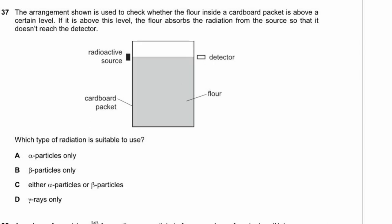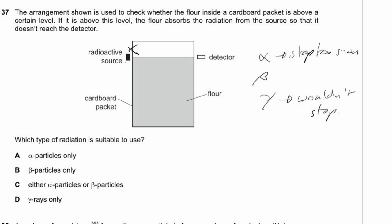Question 37. A radiation source checks whether flour inside a cardboard packet is above a certain level. Alpha radiation would be absorbed by the packet and never reach the detector. Gamma radiation would pass straight through everything. Beta radiation is absorbed by the flour but penetrates the cardboard — the most suitable type. Answer: beta only.